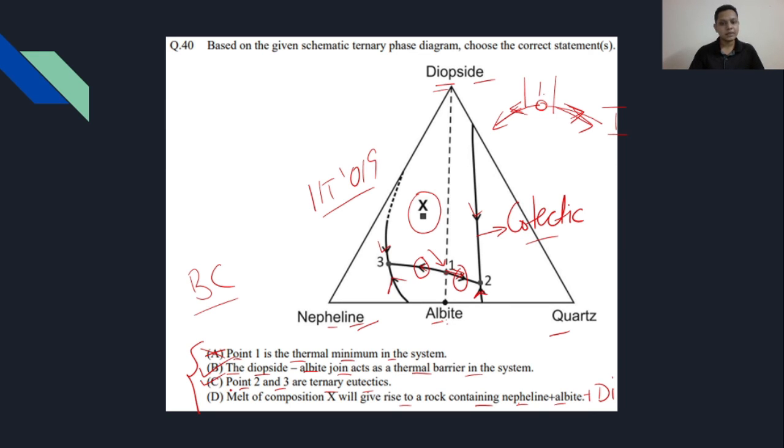You understand the concept that only saying nepheline and albite is not sufficient, because likewise I would have said that X will have diopside only, but that's not true. It will have nepheline, albite, and diopside, but yes, not quartz.